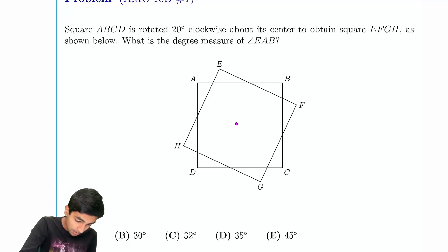So it's rotated about its center, so naturally we know that these two lengths are going to be equal because we rotate A to E, so this is equal to this. And we know that this angle is going to be 20.